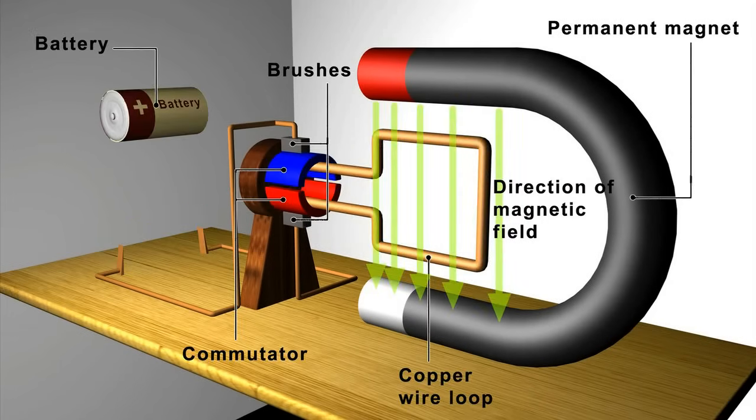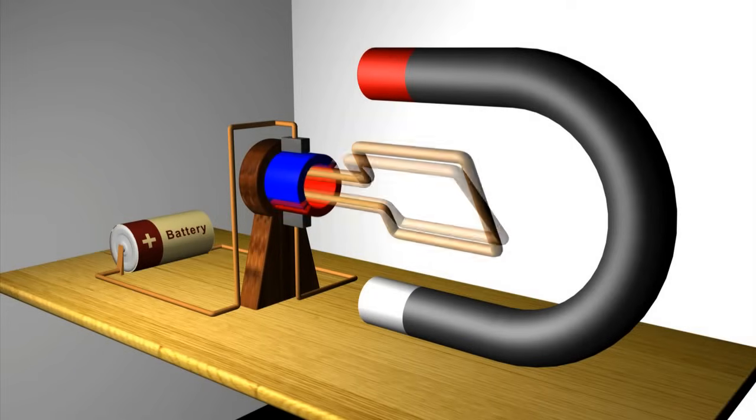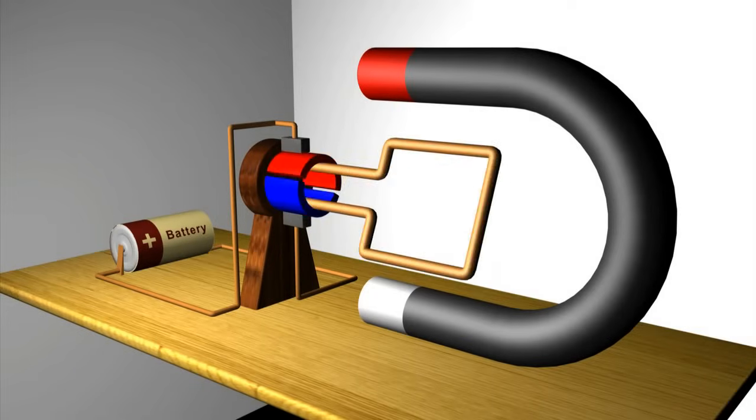Now, when we pass current through the circuit, this creates a magnetic field around the wire, which interacts with the field of the permanent magnet, to produce a rotation of the loop that looks like this.